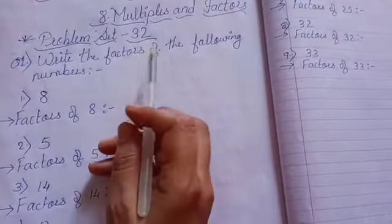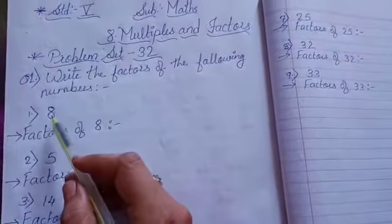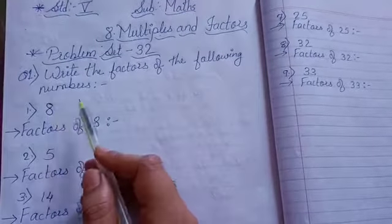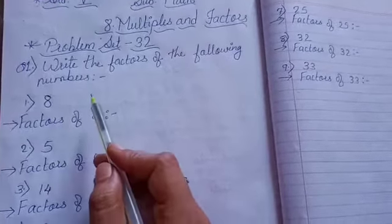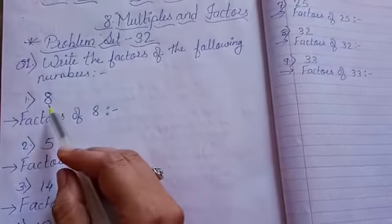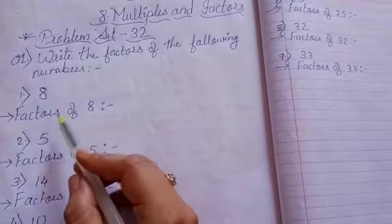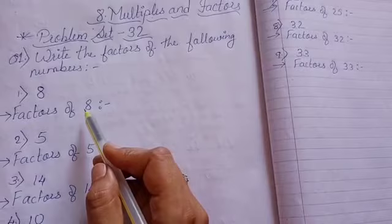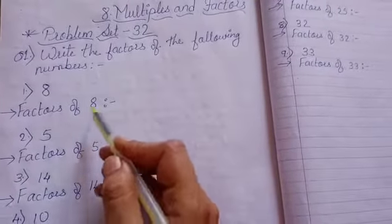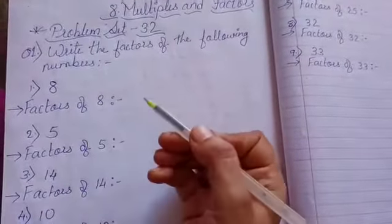Question number 1, write the factors of the following numbers. That means you have to write the factors of the numbers. So your first number is 8. The factor of 8 means the number 8 is going in which table, you have to see that.